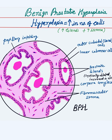You can also write on the glands that they are cystically dilated and increased in number, and label the papillary infolding of the glands. This is how you simply make the diagram of BPH. In the exam, always supplement your theory answer with the diagram. I hope it helps, and any questions are welcome in the comment section. Thank you very much for watching.